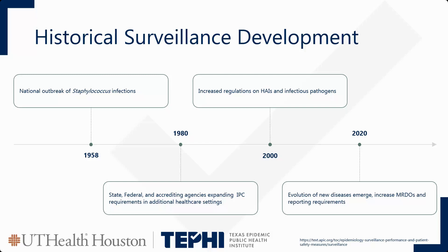You'll specifically see this in our NHSN — National Healthcare Safety Network — definitions, looking at MRSA and MDRO staph infections. In 1980, there was an increase in state, federal, and accreditation agencies expanding infection prevention practices beyond acute care into outpatient clinics, long-term care facilities, and nursing homes, applying infection prevention practices from acute care settings into these other spaces.